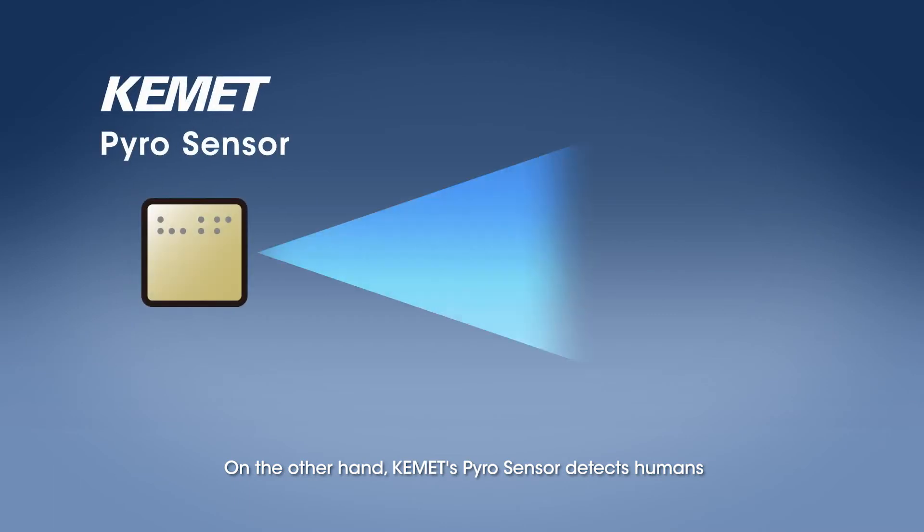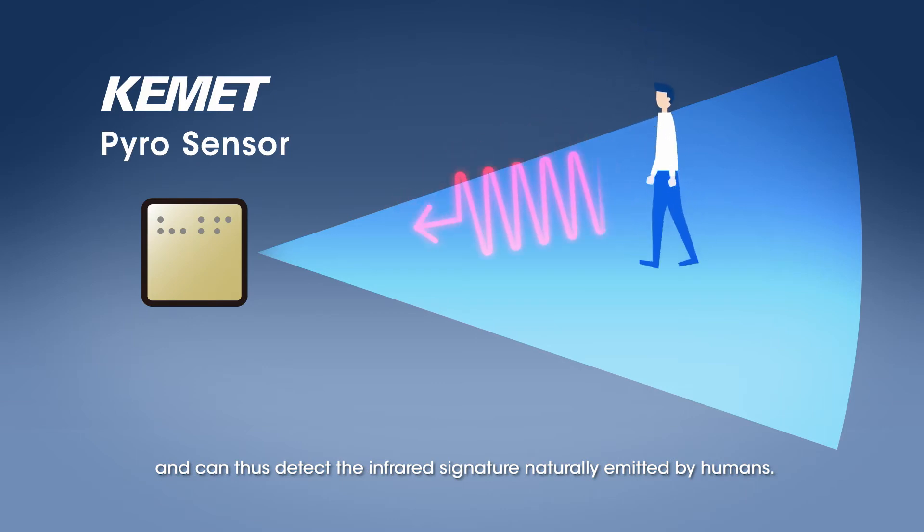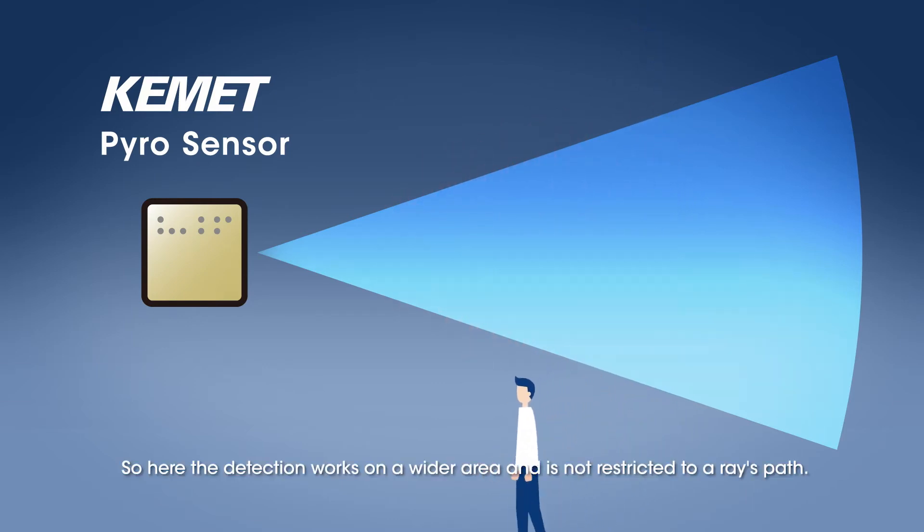On the other hand, KEMET's Pyro Sensor detects humans because its piezoelectric ceramic absorbs the infrared rays emitted from the human body, and can thus detect the infrared signature naturally emitted by humans. So here the detection works on a wider area and is not restricted to a ray's path.